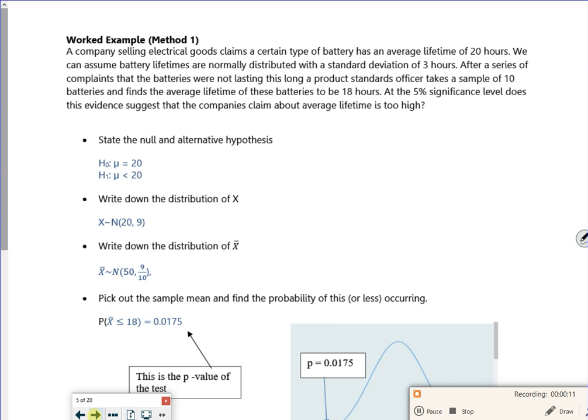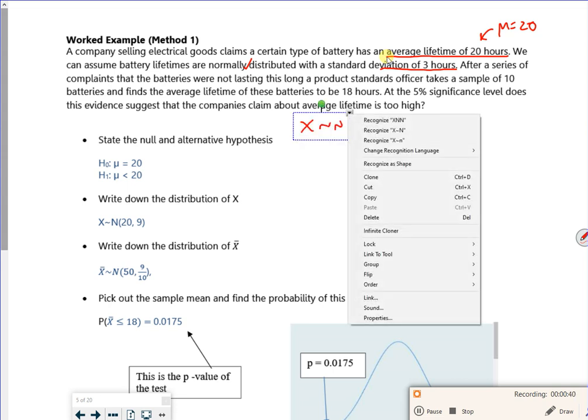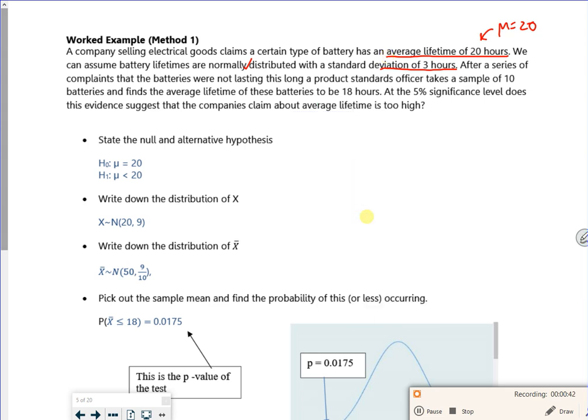So this is his worked example. Let me put stuff in a different corner so it stands out a bit more. So it says a company selling electrical goods claims that a certain type of battery has an average lifetime of 20 hours, so mu equals 20. We can assume the batteries are normally distributed with a standard deviation of 3, so X follows N(20, 3²). You've got to remember it's the variance in that window.